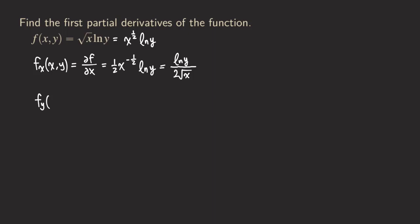The other one is fy. This time we are differentiating with respect to y, written as partial f over partial y. Now x to the 1/2 is treated as a constant multiple, so we just copy it. Then we differentiate ln(y), which gives us 1 over y. So we have square root of x in the numerator and y in the denominator. That's it for this problem.